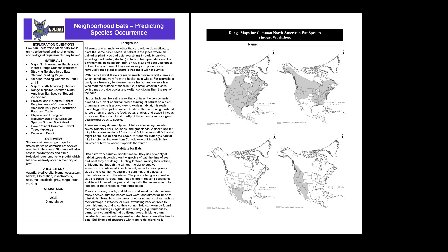In the Project EduBat lesson "Neighborhood Bats: Predicting Species Occurrence," a lesson at the middle school level, students use range maps, habitat types, and other biological requirements to predict which common bat species may live in their area. This activity also includes a PowerPoint presentation that you can use to help students describe the major habitat types identified in the neighborhood bats activity.